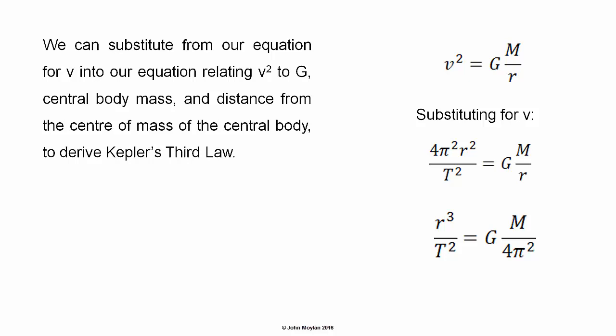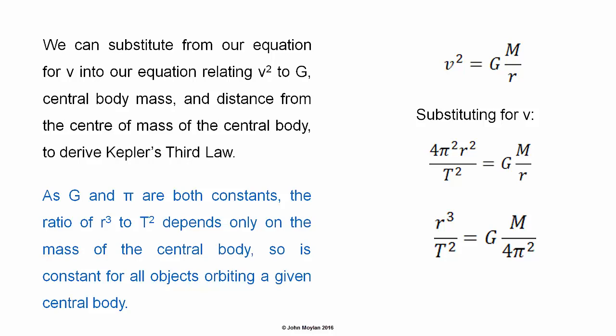As capital G and pi are both constants, the ratio of r cubed to t squared depends only on the mass of the central body. This means that it is a constant for all objects orbiting a given central body. Therefore, r cubed on t squared is going to be equal for all objects orbiting the same central body.